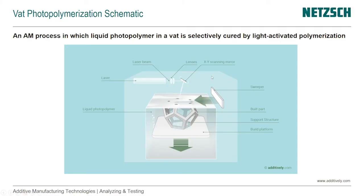Here is a schematic from Additively of the process in one configuration — that was the initial one, and we're starting off with that. You see the different components: we have a VAT of liquid photopolymer, a build platform that can be lowered, and the built part here that's already partially built. Detailed in a lighter color, we see the support structure that's needed. We have a sweeper to even out the surface, and here we have the light source — a laser beam, the lenses that shape it, and an XY scanning mirror that helps trace the laser in the pattern we need.